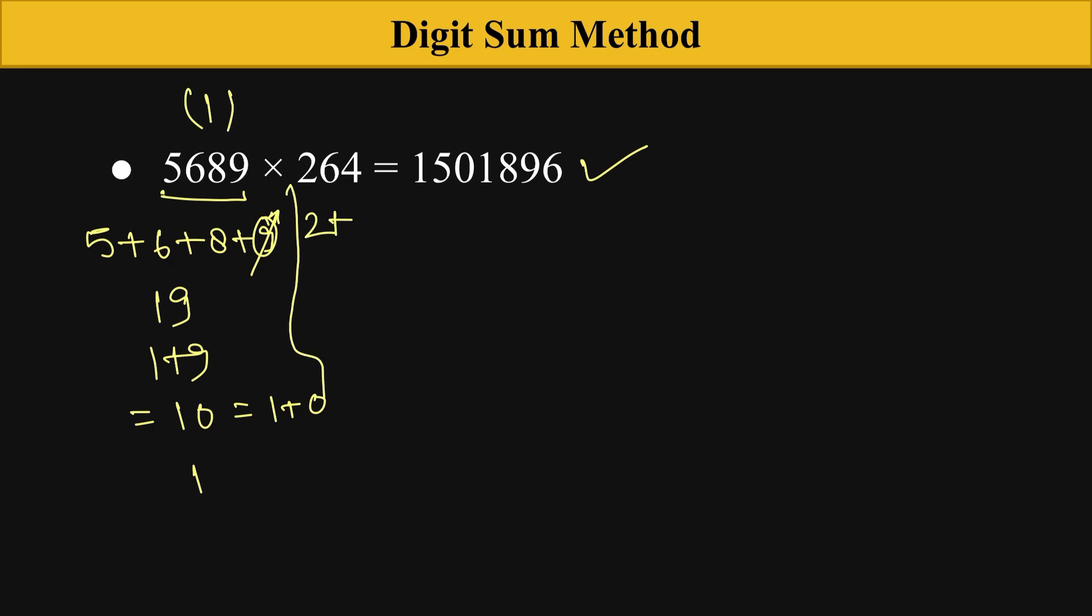Let's calculate the second digit sum. The digit sum of 264 is 2 plus 6 plus 4, which is 12, and 1 plus 2 equals 3. So it is 3.